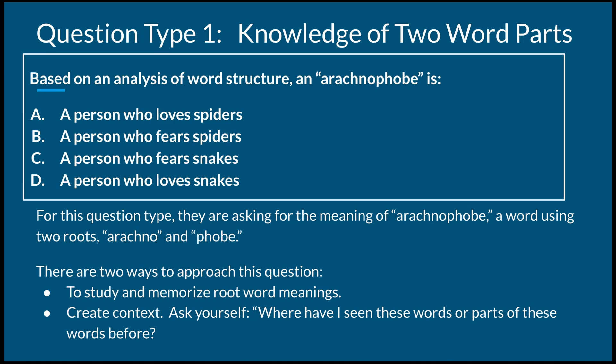There are two different ways to approach this question. First is to study and memorize your root word meanings. And two is to create context — ask yourself, where have I seen these words or parts of these words before? You may hear somebody say, 'I have a phobia of something.' Or if you're an 80s kid, you might have seen the movie Arachnophobia.